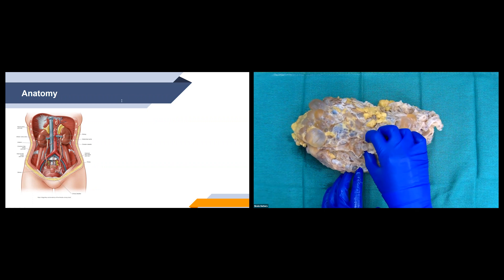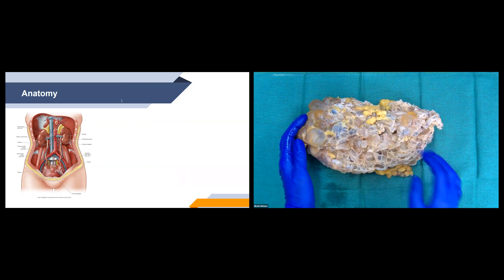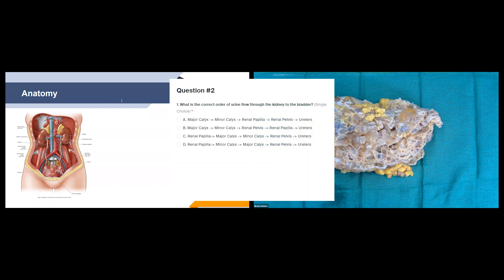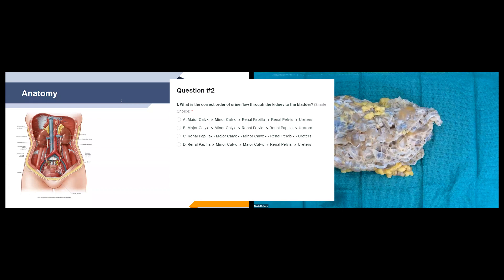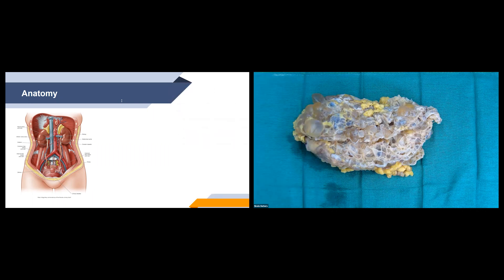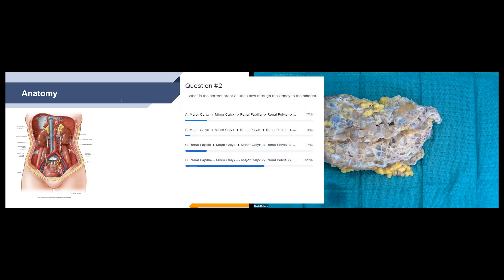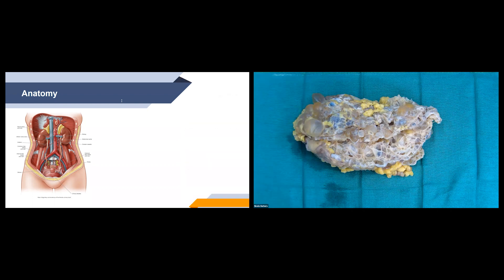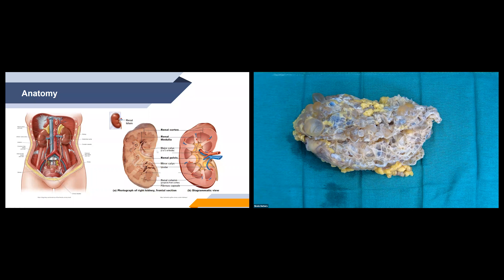Now we'll talk about the internal anatomy of the kidney and bring up our next polling question: what is the correct order of urine flow through the kidney to the bladder? The correct answer is D. It goes from the renal papilla, which is the apex of the renal pyramid — the triangular-shaped tissue that consists of the medulla.